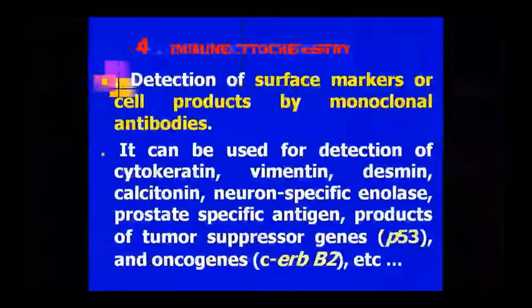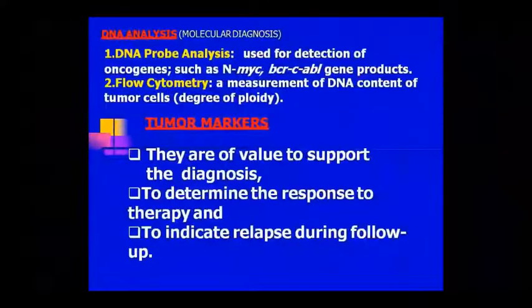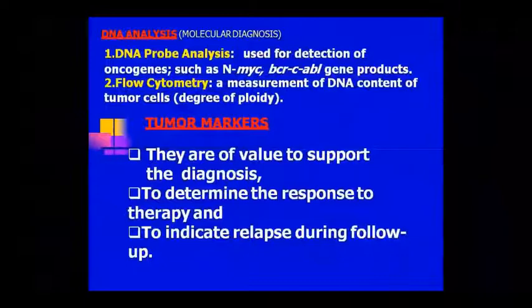Tumor marker tests are also used to detect cancer — in SPMC you also need to know the tumor marker test in microbiology. We can also do molecular diagnosis, in which we do DNA analysis. DNA probe analysis and flow cytometry are two methods. In DNA probe analysis we detect oncogenes such as N-MYC, BCR-ABL gene products, etc. In flow cytometry we can measure the DNA content of tumour cells and measure the degree of ploidy. This is called DNA analysis.